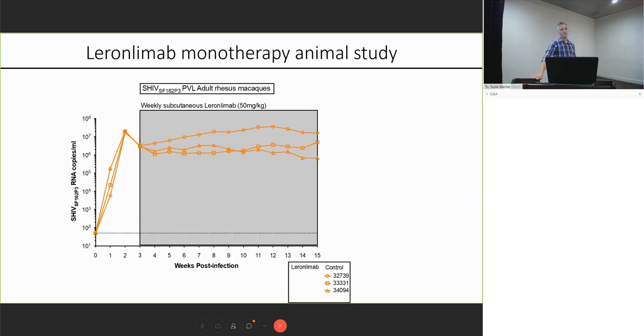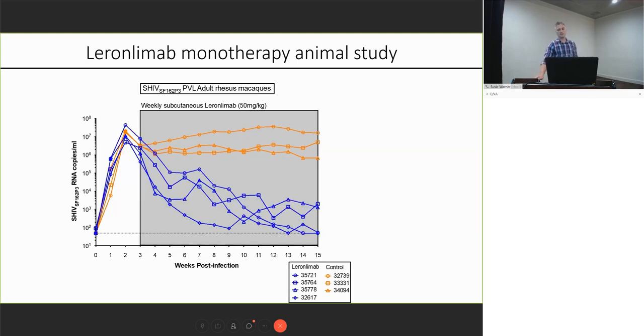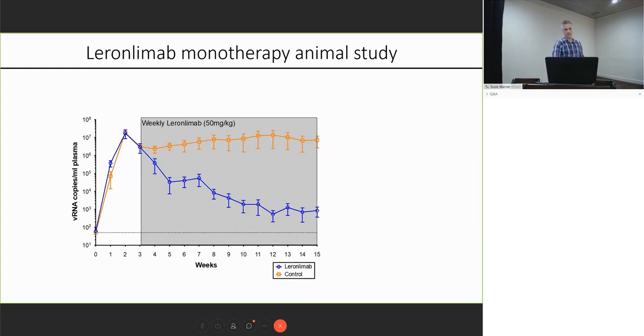So for this we selected SHIV SF162P3 for two reasons. One, when leronlimab was first isolated, it was known that the envelope from SF162P3 for whatever reason was about tenfold more resistant to neutralization than any other HIV isolate. No idea why, but it just is. So we thought this would be a higher bar for this in vivo. Secondly, this virus has been, the mechanisms have been defined by which it shifts tropism from R5 to X4. So that's why we selected this virus. So here are three control macaques. You can see we IV infected them. They have very high viral loads throughout. That's in contrast to the four animals that we treated with weekly subcutaneous injections of leronlimab. You can get a slow decay of virus, but it does work. You can see that at the end of the treatment, there were two animals that reached fully undetectable viremia. This works out to about a 10,000-fold reduction in viral loads in the plasma. So it seems to be quite effective.